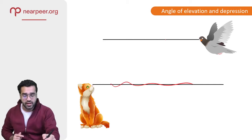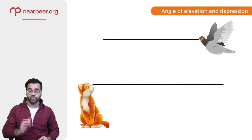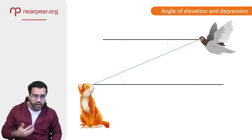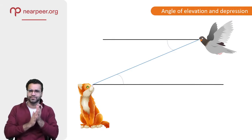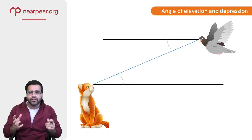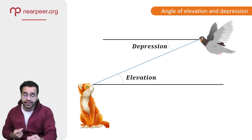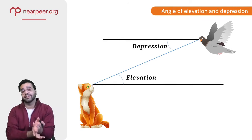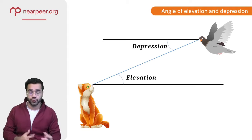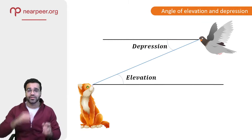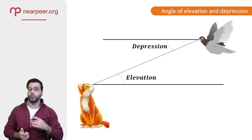The angles we're going to talk about are always measured from the line of sight, which is always a horizontal line. The cat looks at the bird and is really happy and elevated, thinking 'yummy dinner.' The bird is frightened, scared, and depressed — 'I'm gonna die today.' So the cat's angle is called the angle of elevation, and the bird's angle is called the angle of depression. Kids often confuse the two, which is why I made up this story — the cat is elevated and happy; the bird is depressed.